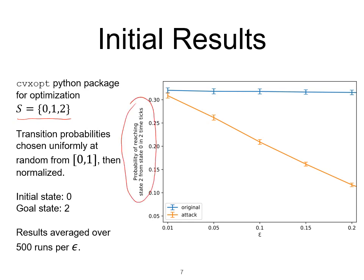Now the diagram here shows how the probability of reaching the goal in two steps varies with the perturbation bound ε. The blue curve, which is constant as is to be expected, is the original unperturbed system, so the probability there doesn't vary at all with ε. The orange line is the perturbed system, or the system under attack, and as you can see, as expected, the probability of reaching the goal decreases as epsilon goes up.